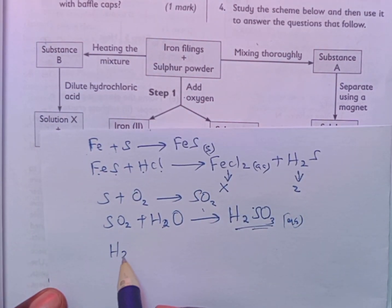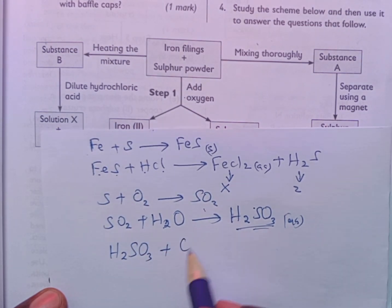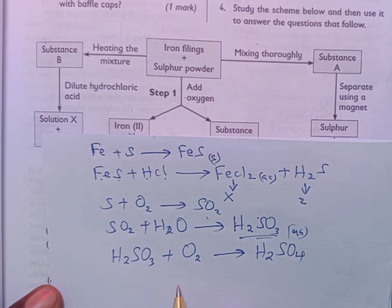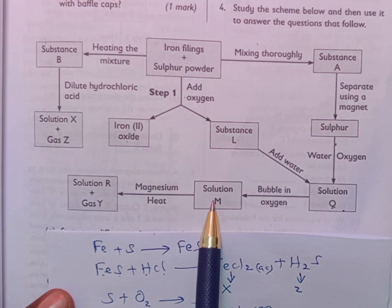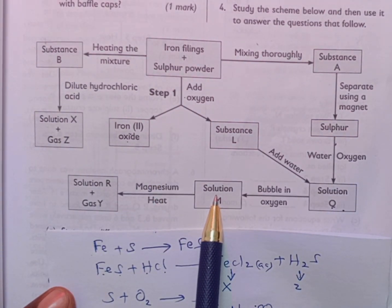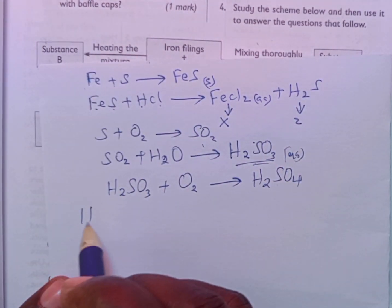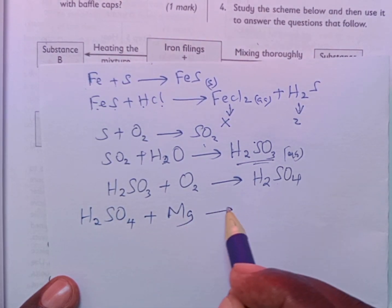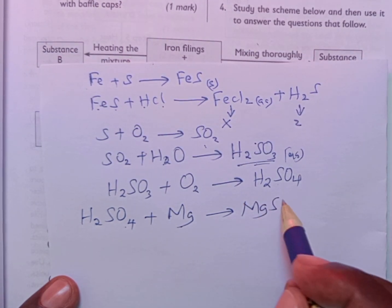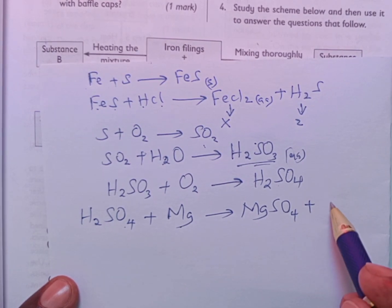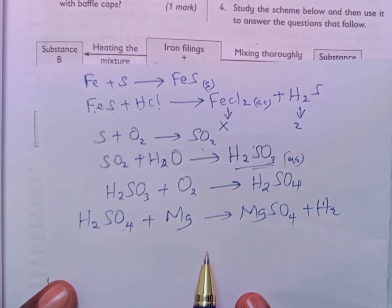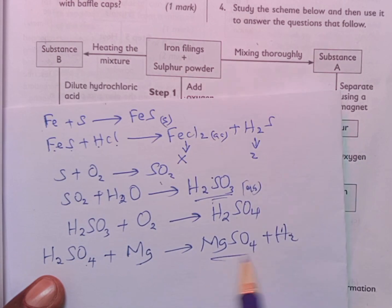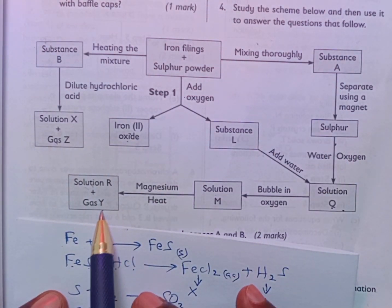Then the sulfurous acid is bubbled in oxygen where sulfuric acid is formed — this is solution M. The sulfuric acid reacts with magnesium to give us magnesium sulfate plus hydrogen gas. So the solution formed is magnesium sulfate and gas Y is hydrogen gas.